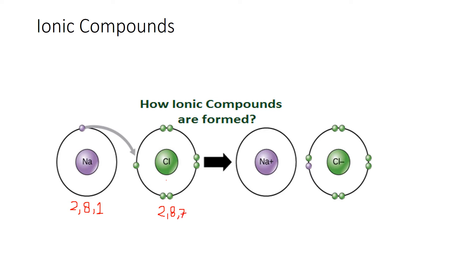The configuration of chlorine is 2, 8, 7. Configuration means knowing the atomic number of the element. Atomic number equals the number of protons as well as the number of electrons. These electrons are distributed in different shells. In the first shell there are 2 electrons, in the second shell 8 electrons, and in the last shell 1 electron. So sodium has to lose this one electron to have the complete octet of 8.